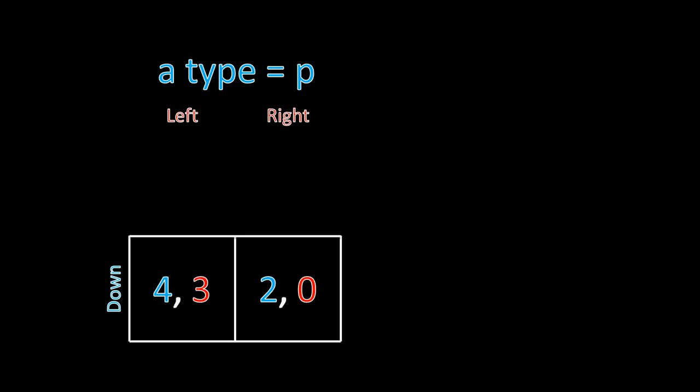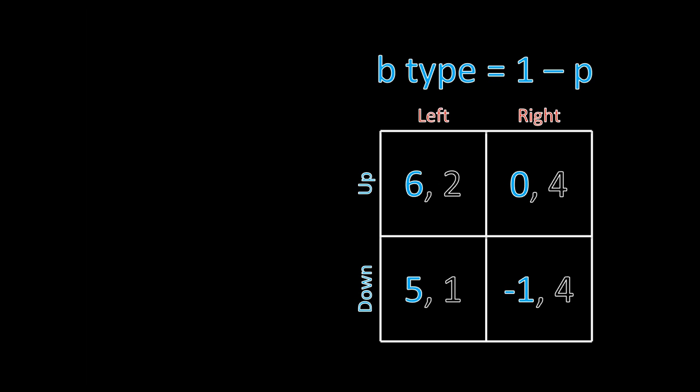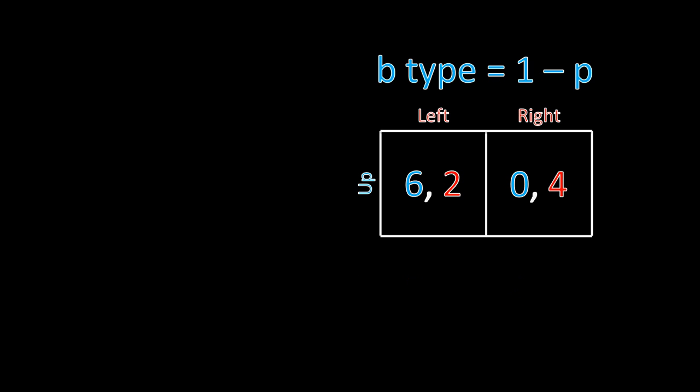Going to the B type situation: player one as the B type knows he's the B type, and here up strictly dominates down — six is greater than five, and zero is greater than negative one. So if player one is the B type, he's never going to want to play down. Up is always better regardless of what player two is doing, so up has to be the Bayesian Nash Equilibrium strategy for the B type of player one.